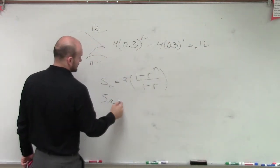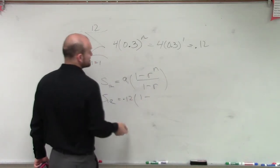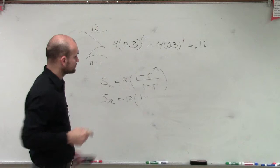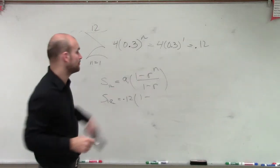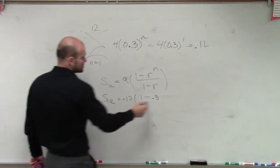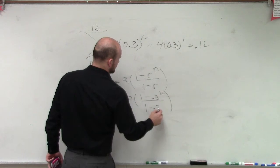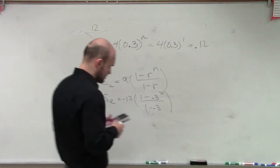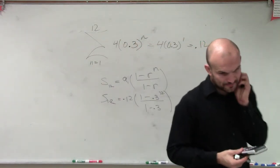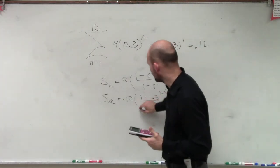So S sub 12 equals 0.12 times 1 minus my r, which is going to be 0.3, raised to the n, which is 12, divided by 1 minus 0.3. Now, ladies and gentlemen, I just need to calculate my values.